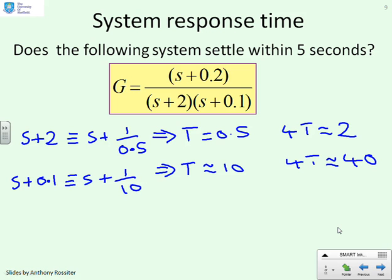And in truth, you really cannot answer the question above without doing some exact algebra. I would have to write g equals a over s plus 2 plus b over s plus 0.1. And work out the answer exactly. If b was very small compared to a, I could ignore the slow mode. But if b is not small, I can't ignore the slow mode. And the system won't settle within 5 seconds. But the only way I would know that would be by calculating a and b explicitly. And of course, that requires doing some partial fractions and lots of number crunching. So you cannot determine it just by looking at g and looking at the pole positions.